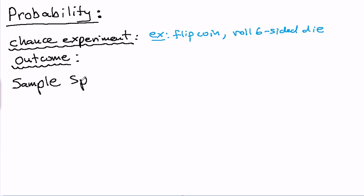A sample space. We typically use the capital letter S to denote a sample space. And all a sample space is, is a collection of all possible outcomes of a chance experiment.